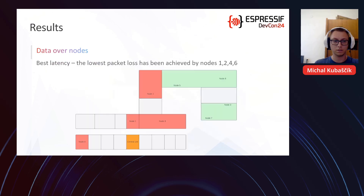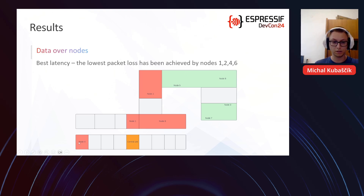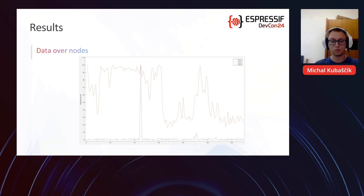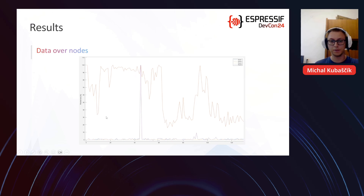The last comparison is for best latency. The lowest packet loss was achieved by nodes 1, 2, 4, and 6 — the nearest ones to the central unit. On this graph we can see that nodes 1, 4, and 6 have approximately zero packet loss with one peak in node 6, and node 2 has packet loss somewhere around 50%.